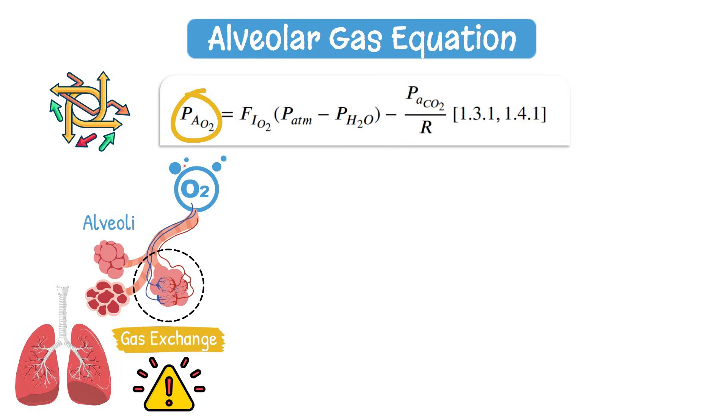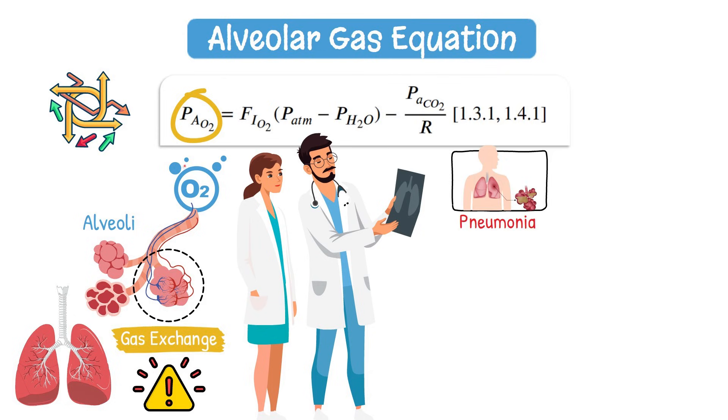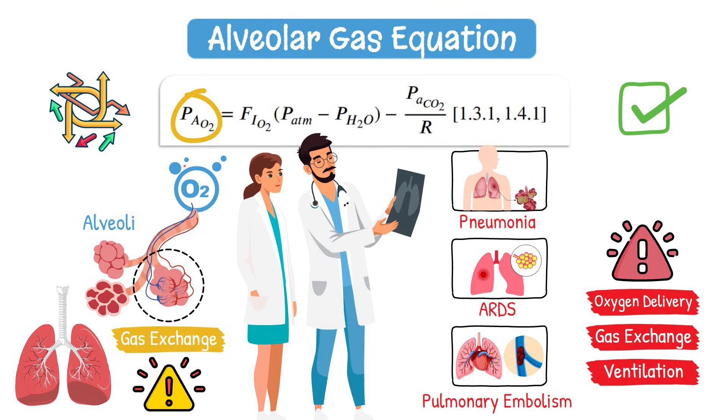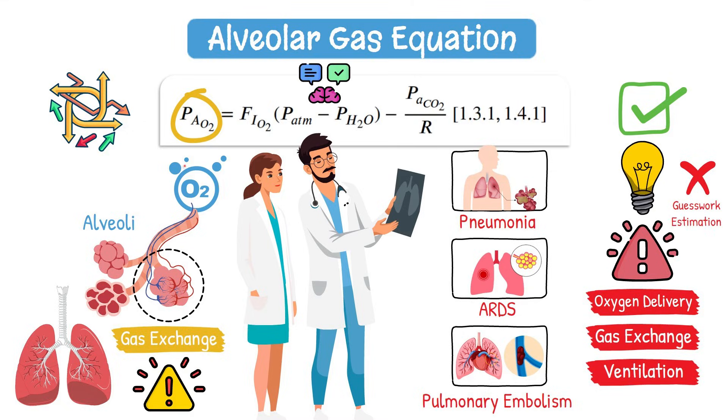This is critical when evaluating patients with conditions like pneumonia, ARDS, or pulmonary embolism. Knowing how to apply this formula helps you determine if the issue lies in oxygen delivery, gas exchange, or ventilation. That level of insight can't come from guesswork or estimation. It comes from understanding and applying the math.